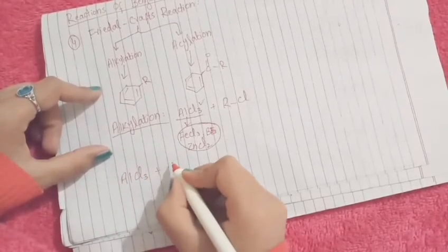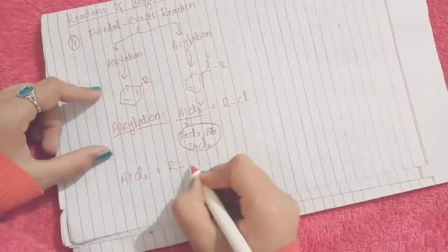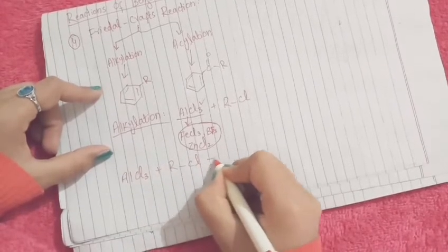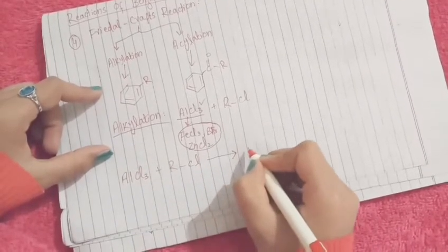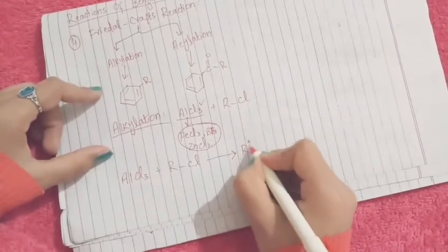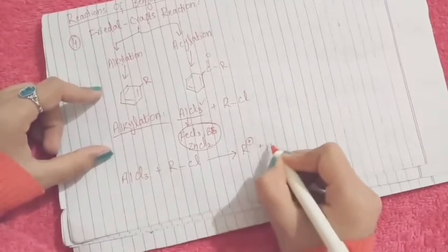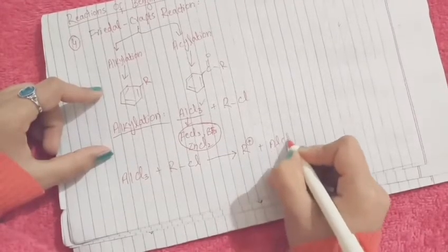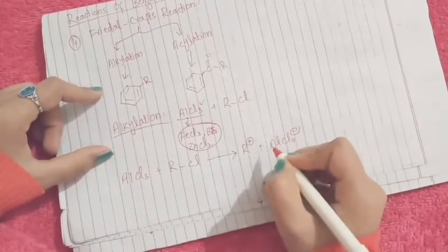First of all, we will take aluminum chloride with alkyl halide, and we will get a carbocation plus AlCl4 negative.